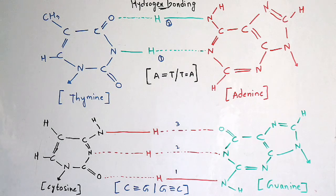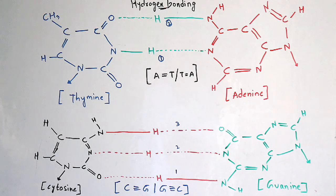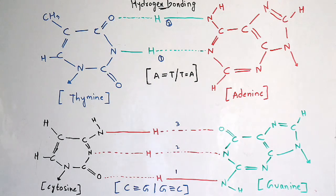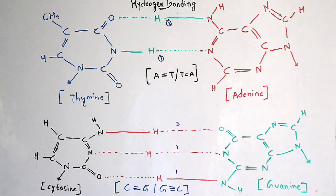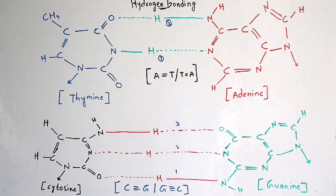So this is about Chargaff's rule. For a deeper explanation of nucleotides like adenine, thymine, cytosine, and guanine, I have already explained this in my previous video — the link will be given in the description box. Thank you for watching. If you like this video, please like and subscribe, and if you have any doubts please comment in the comment box.